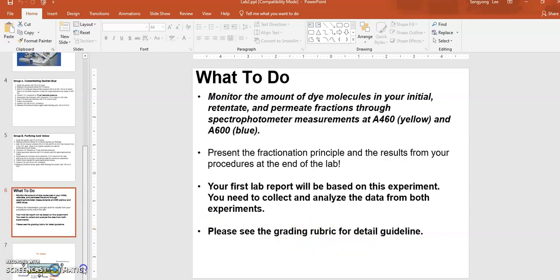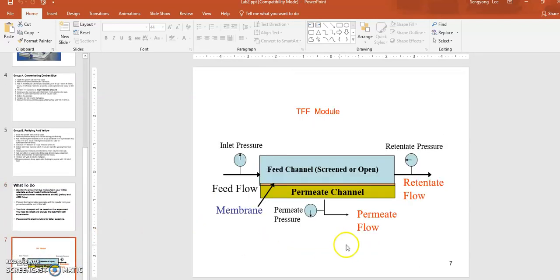Based on this, you can write your first lab report on this experiment. I'm going to post the grading rubric. This is what the filter cassette looks like: membrane with feed coming in, permeate going through, retentate going out. That's it. Thank you.